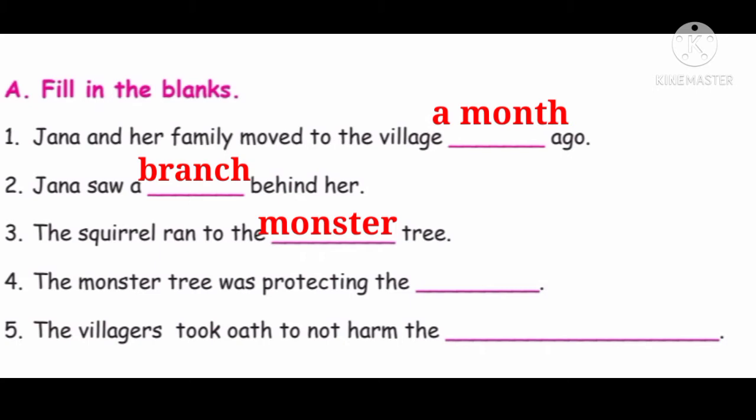Fourth question: the monster tree was protecting the dash. அந்த அசுரமரம் யார் காப்பாத்திருச்சி? Squirrels — அணில்கள். The monster tree was protecting the squirrels.